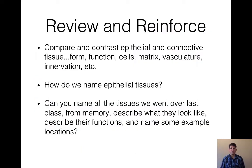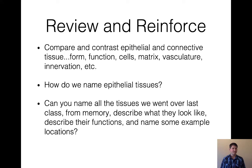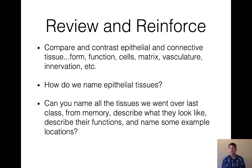Before we get going, spend a little time thinking about epithelial tissue and what you know about connective tissue from your labs. Think about form, function, what kinds of cells are present, what the matrix looks like, vasculature, and innervation. Compare and contrast those, and remember how we named epithelial tissues — that will be important to contrast with connective tissue. Go ahead and pause the video, spend a few moments writing it down and checking your notes, then press play when you're ready.